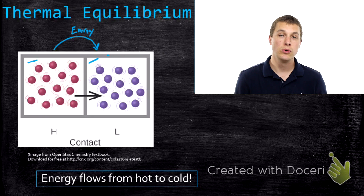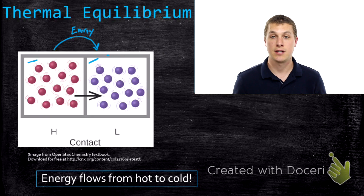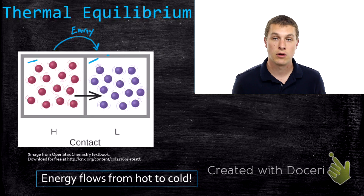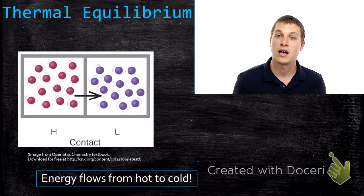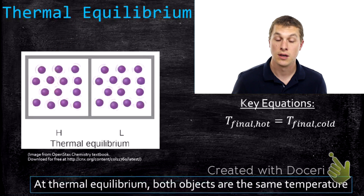Thermal equilibrium is the fact that when you put two objects into contact with each other, over the long run they'll approach the same temperature. It might take some time, but eventually they'll be the same temperature.